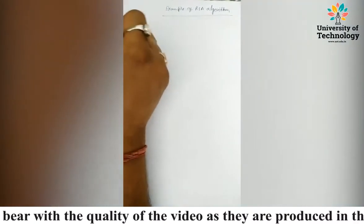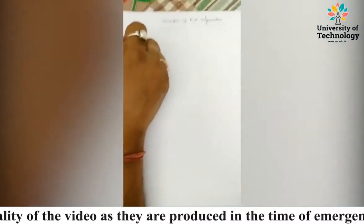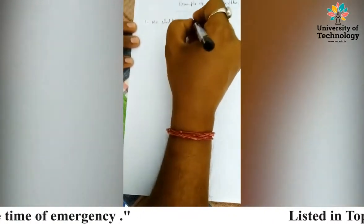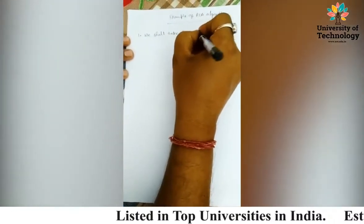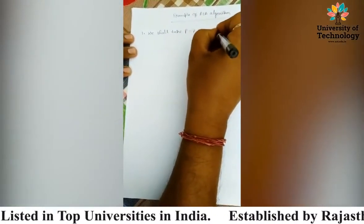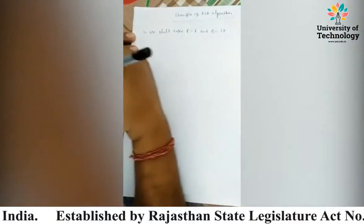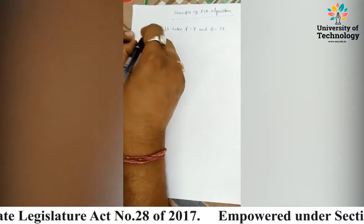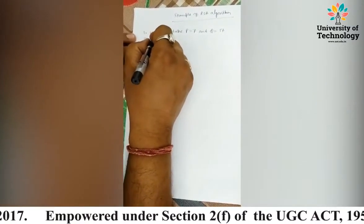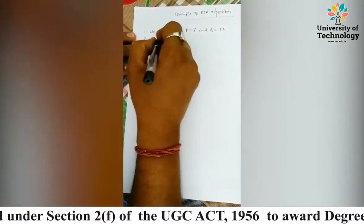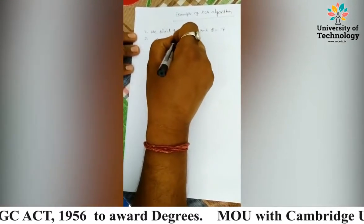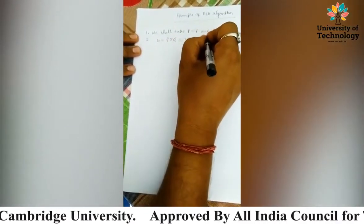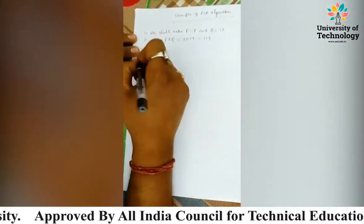First step: we shall take P equals to 7 and Q equals to 17. Now in the second step, N equals to P multiplied by Q, that is 7 multiplied by 17, which equals 119.